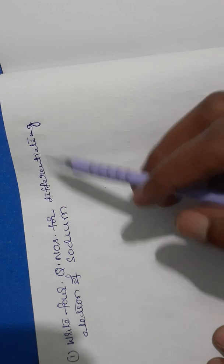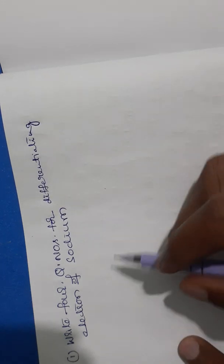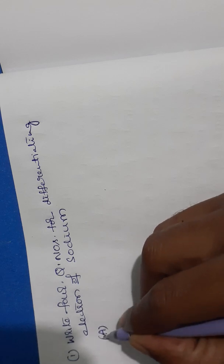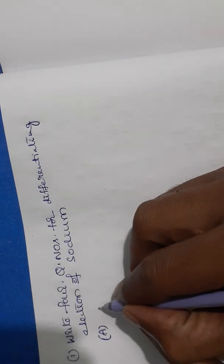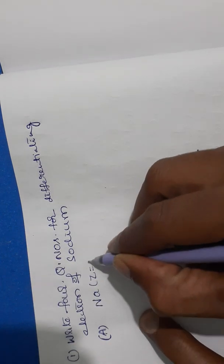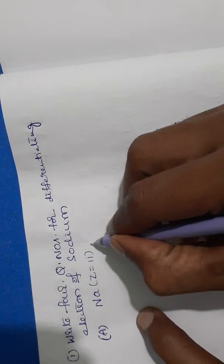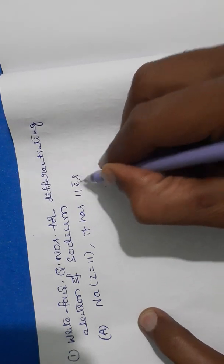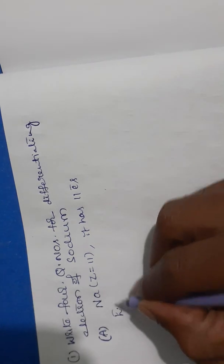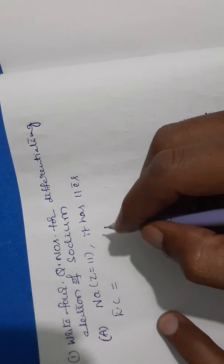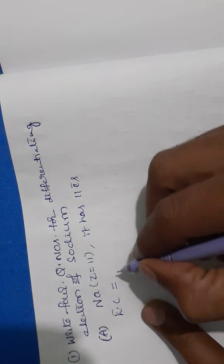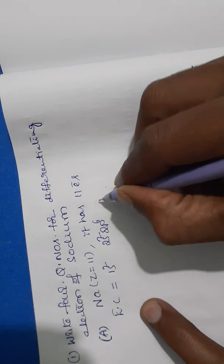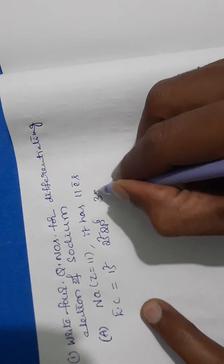Write four quantum numbers for the differentiating electron of sodium. The differentiating electron is nothing but the final electron. Sodium has atomic number 11, so it has 11 electrons. The electron configuration for sodium is 1s², 2s², 2p⁶, 3s¹.